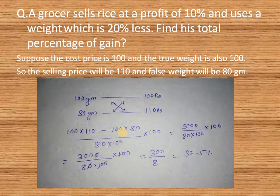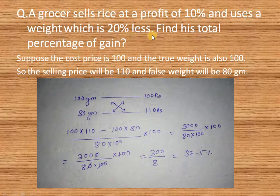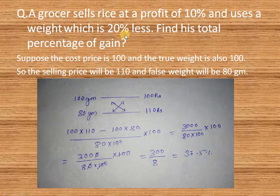This question is different from the previous one. Suppose the cost price is 100, then the selling price will be 110 because of 10 percent profit. Suppose the true weight is 100 grams, then the false weight will be 80 grams because the shopkeeper sells 20 percent less. So the shopkeeper bought 100 grams for 100 rupees and sells 80 grams instead of 100 grams for 110 rupees.